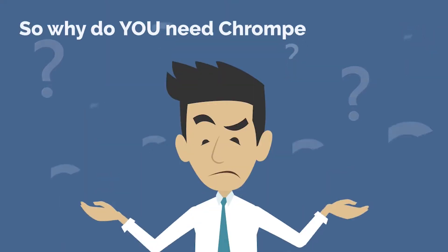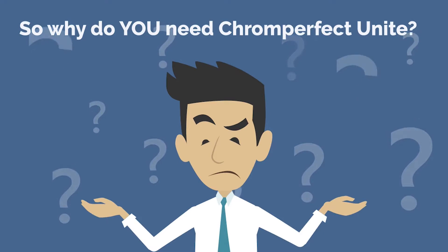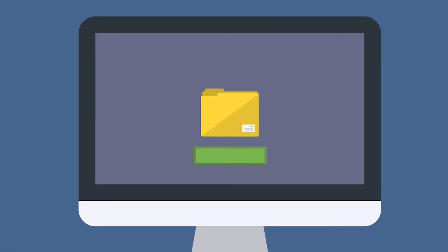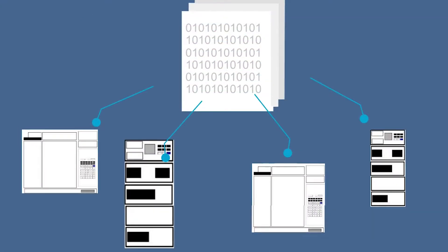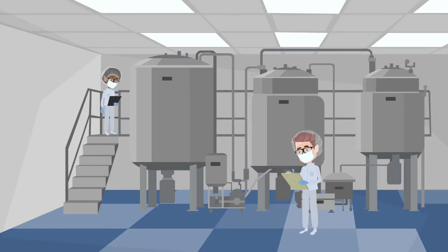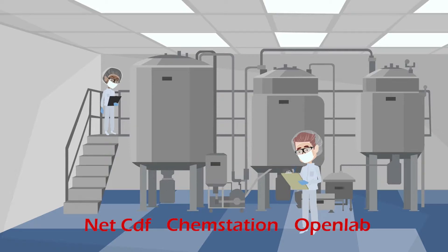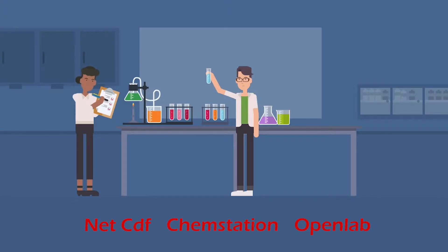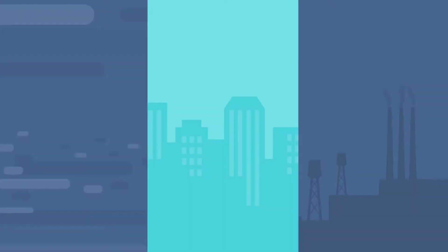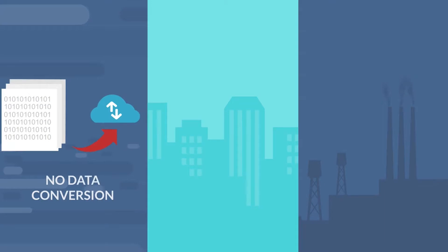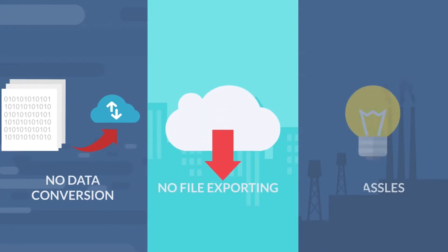So why do you need ChromePerfect Unite? Because Unite allows you to open files from any other chromatography data system, regardless of the instrument used to acquire the data. With support for industry standard data formats, as well as ChemStation and OpenLab files, you can open your third-party files directly in ChromePerfect Unite. No data conversion, no file exporting, no hassles — just click and go.